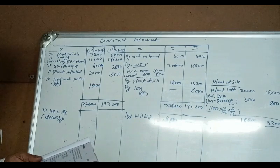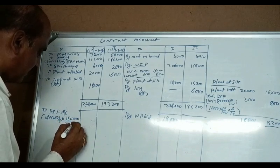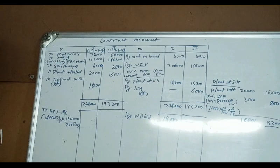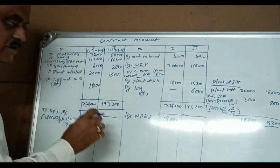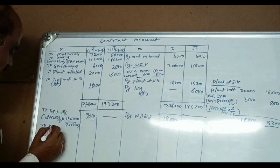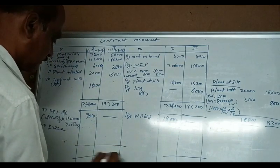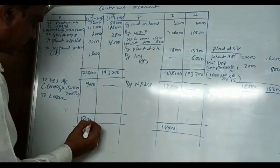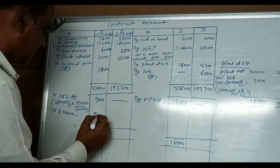Cash received divided by work certified: one lakh fifty thousand divided by two lakhs. So the profit transferred to profit and loss = eighteen thousand into two-thirds into one-lakh-fifty by two-lakhs. The total notional profit is eighteen thousand, and the profit transferred to P&L comes to nine thousand.